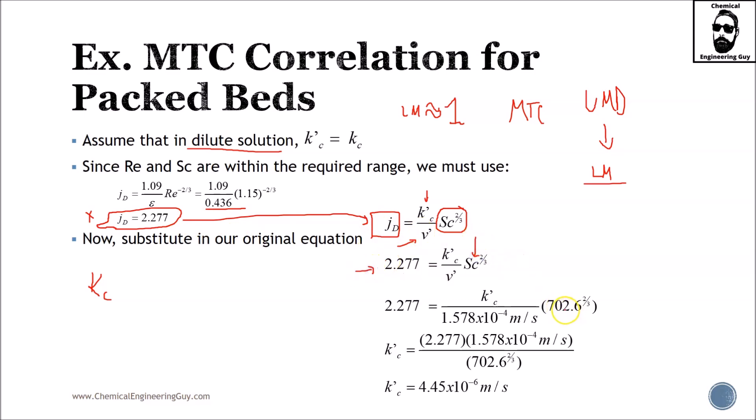The Schmidt number was 702 to the 2/3. JD value remains the same. And the velocity, we already know it. Substitute data, solve for kc, and you are done. Actually, the k value, which remember, technically speaking, is k without apostrophe. But because we assume dilute solution, we can assume this is correct.